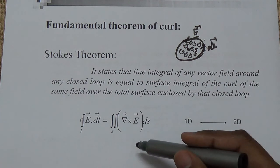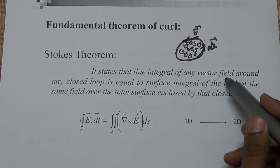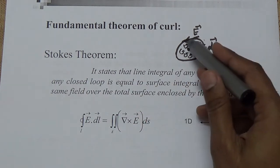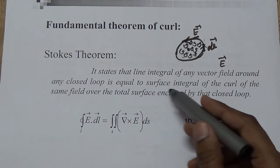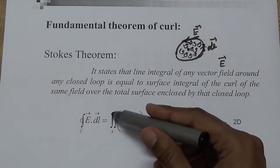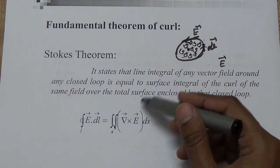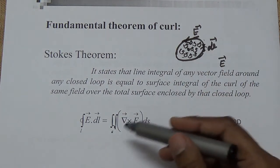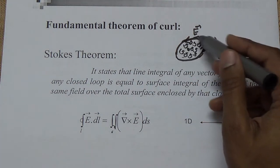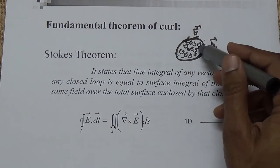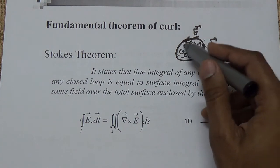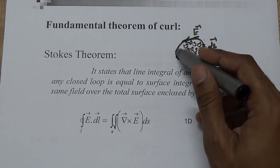Stokes Theorem states that the line integral of any vector field — here we consider the electric field — around any closed loop is equal to the surface integral of the curl of the same field over the total open surface enclosed by that closed loop. This closed loop encloses the open surface, and within this surface the sum of the small portions of the curl equals the large closed loop integral.